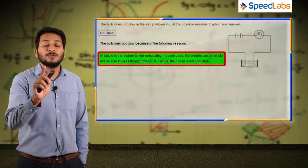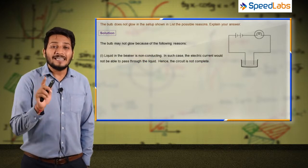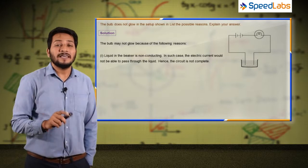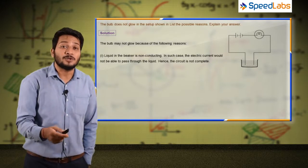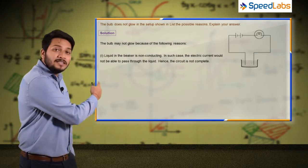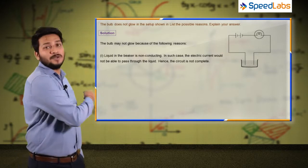If the solution is non-conducting, the electric current would not be able to pass through the liquid, hence the circuit is not complete. Current will not flow in the circuit because the solution in the beaker is not allowing current to pass.